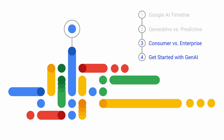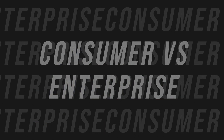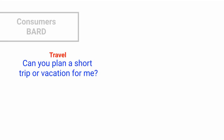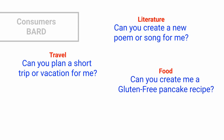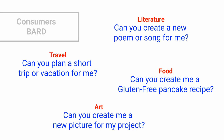Next we will compare consumer AI products versus enterprise AI products and when you would use one over the other. Google's consumer AI product is called Bard, and you might ask it questions like: can you plan a short trip or vacation for me? Can you create a new poem or song for me? Can you create me a new gluten-free pancake recipe? Or can you create me a new picture for my project?